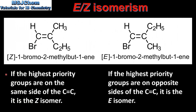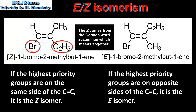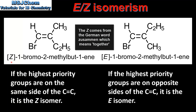If the highest priority groups are on the same side of the carbon-to-carbon double bond, it is the Z isomer. Here we have the molecule that we looked at previously. Both the highest priority groups — that's the bromine atom and the C₂H₅ group — are on the same side of the carbon-to-carbon double bond. Therefore it is the Z isomer, and the full name of this molecule is Z-1-bromo-2-methyl-but-1-ene.